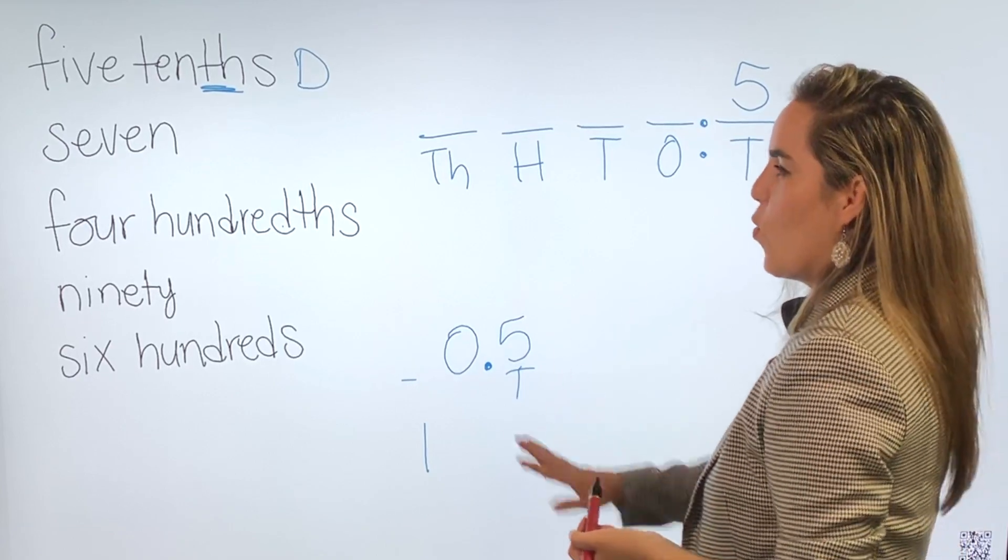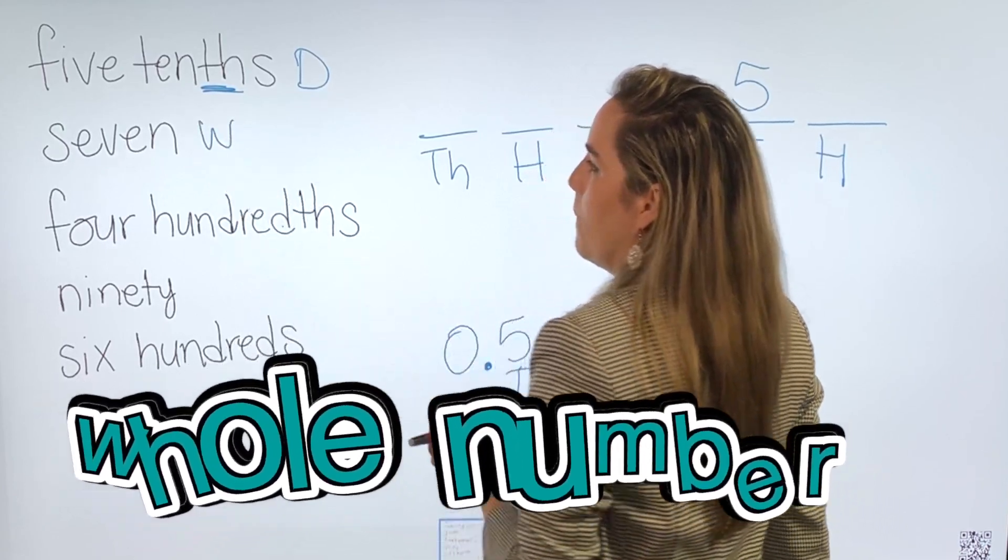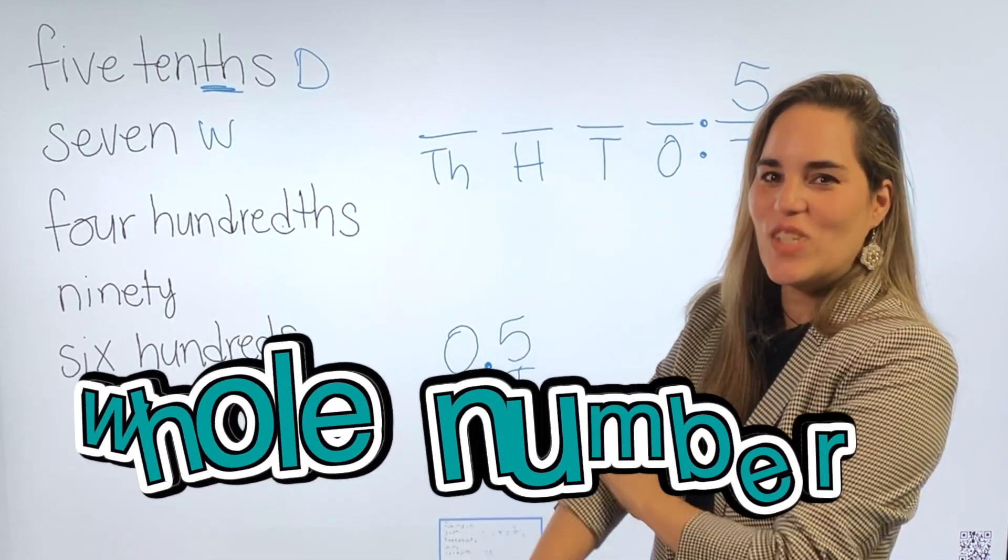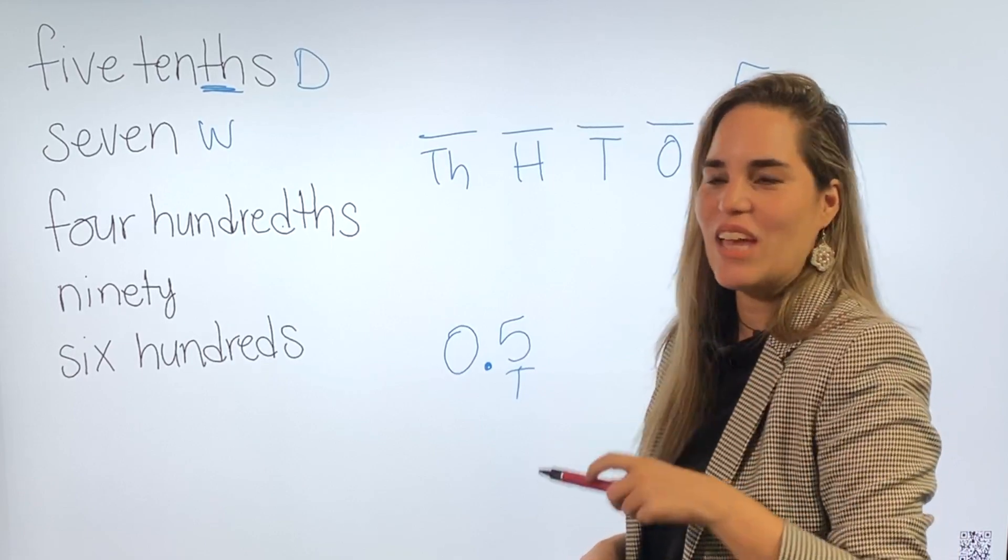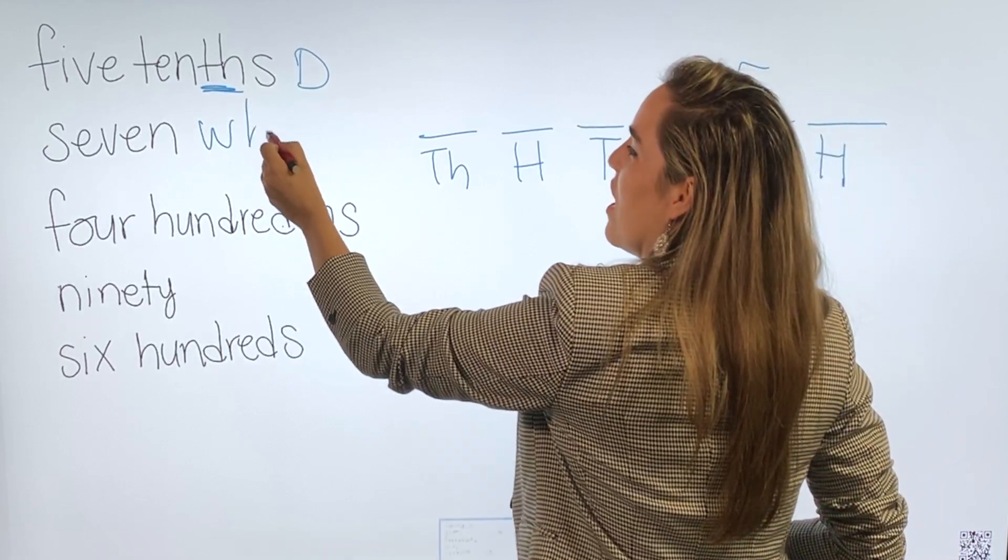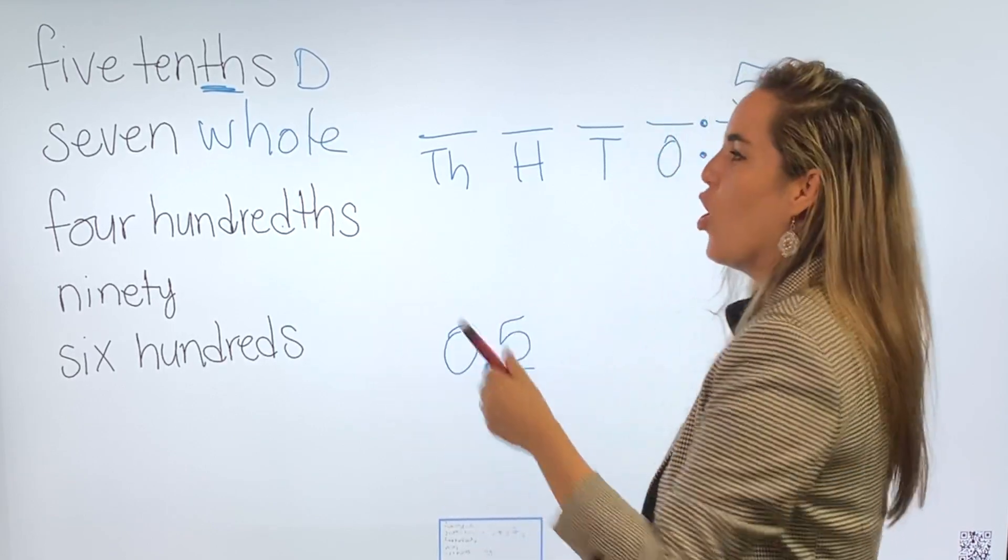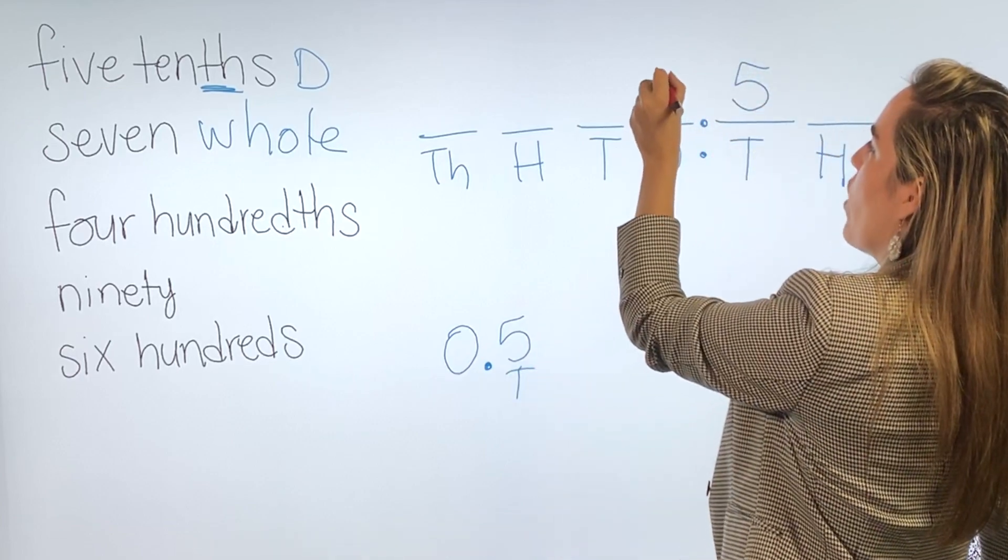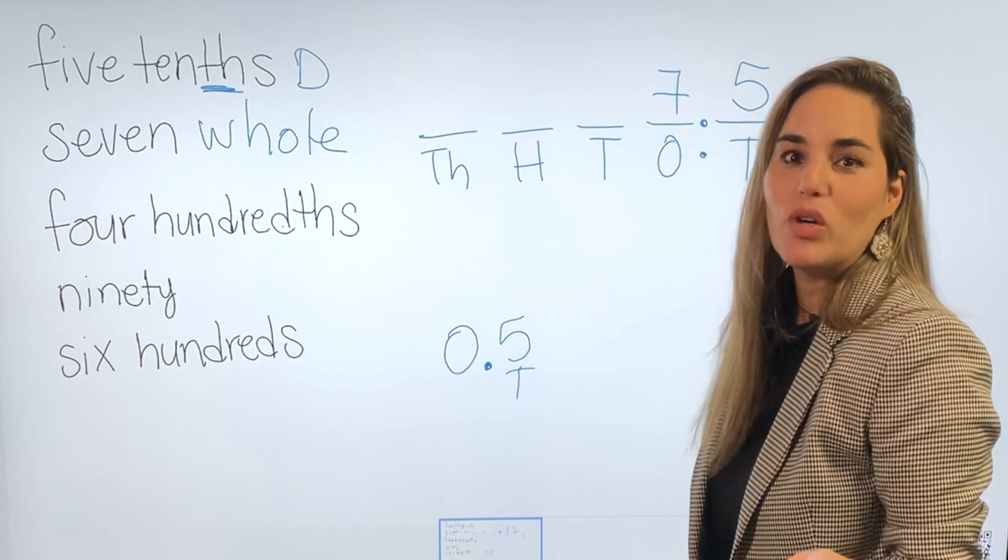Next, we have the number seven. Seven is a whole number. Whole starts with the letter w. Many of my kids write whole h-o-l-e but whole is w-h-o-l-e. Seven is a whole number and I'm going to write it here. Just the number seven. You learned this in pre-k.